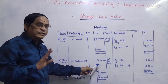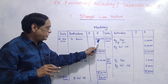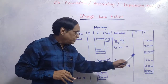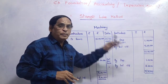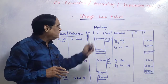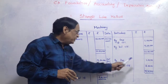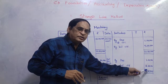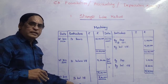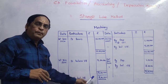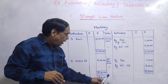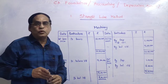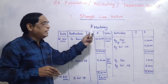Even though the book value is now 9 lakhs, we still charge 1 lakh depreciation. Next year, again 1 lakh. That is the Straight Line Method — depreciation is constant at 1 lakh every year. After the second year, the closing balance is 8 lakhs. The opening balance becomes 8 lakhs. After the third year it becomes 7 lakhs. That's the Straight Line Method.